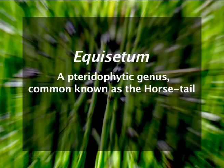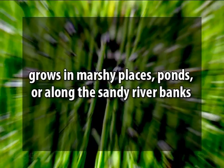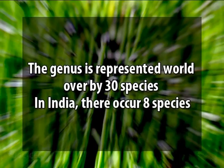Equisetum, a pteridophytic genus, is commonly known as horsetail or scouring rush. It commonly grows in marsh places, ponds, or along sandy river banks. The genus is distributed all over the world except Australia and New Zealand. The genus is represented worldwide by 30 species. In India, there occur eight species.